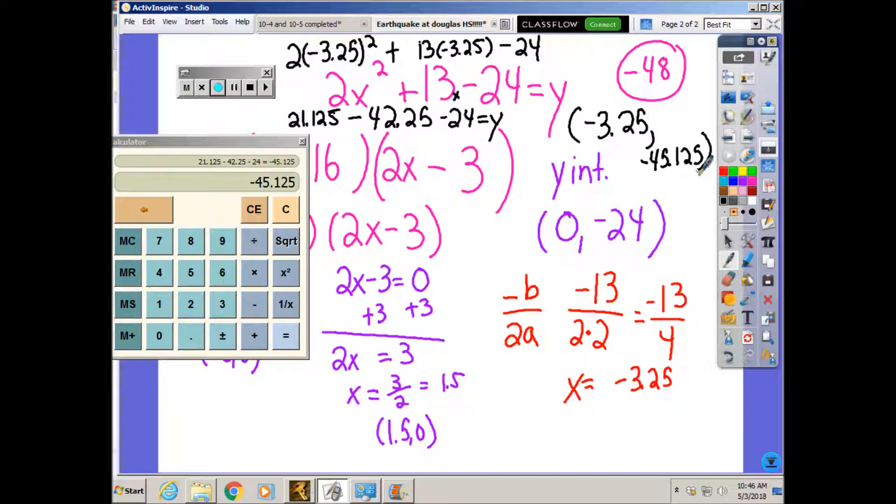So now in EdPuzzle, you would be typing in what you did, why you got it wrong. Either you didn't know how to do it. You put for your vertex 0 negative 45.125. Or you made a math error.